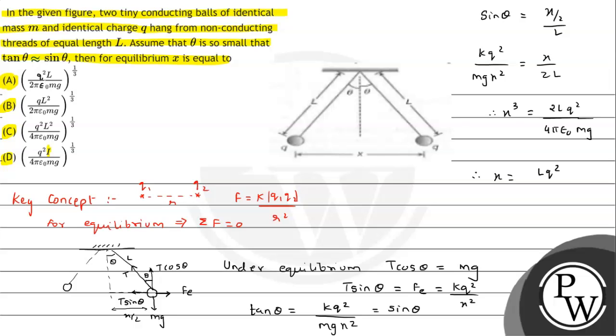From this we can say x ki value will be (L q² / 2π ε₀ mg) with a cube root. So this is the answer to the question which will match our option A. I hope you understood the solution. All the best.